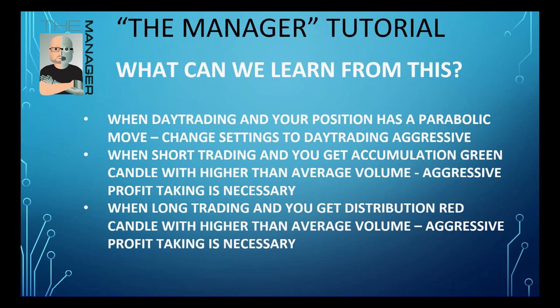What can we learn: when day trading and your position has a parabolic move, change the settings to day trading aggressive. When you're short and you get an accumulation green candle with higher than average volume — that cyan dot above — you need to be taking profit quickly because there's potential for a violent reversal. When you're long, the opposite applies: a red distribution candle with higher than average volume and that cyan dot above means aggressive profit taking is necessary.